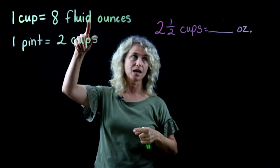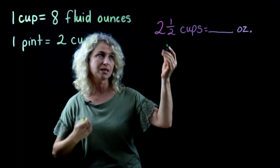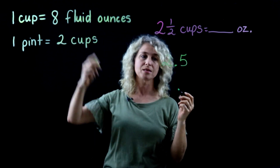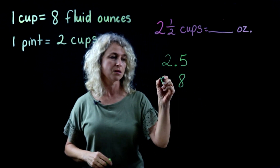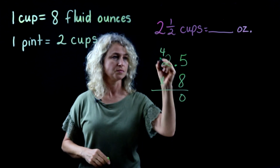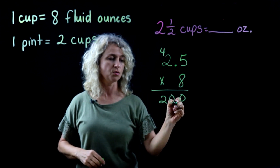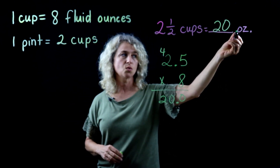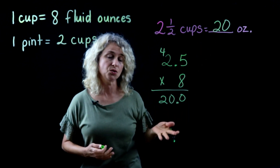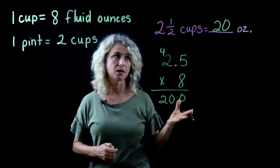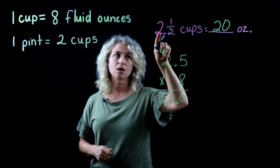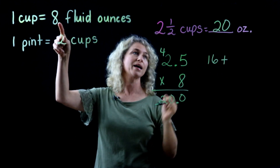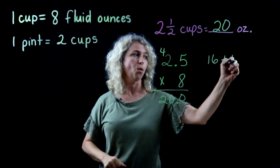Now let's look at two and a half cups equals blank ounces. We're going from cups to ounces, so two and one-half is the same as 2.5. Multiply that times 8 — don't forget to move your decimal — and two and a half cups equals 20 ounces. You could also do this mentally: 2 times 8 is 16, and half of 8 is 4, so 16 plus 4 is 20.